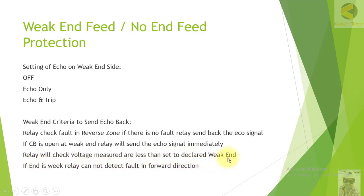The relay will check if the measured voltage is less than a set threshold to declare the end as weak. There is an option in the relay to check the voltage level. For example, if two or three generators are connected, we perform a voltage check to make sure the end is at that moment truly a weak-end before declaring it as such and performing the weak-end feed communication scheme. If the end is weak, the relay cannot detect a fault in the power direction.